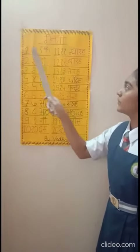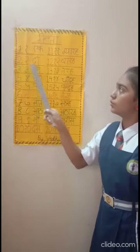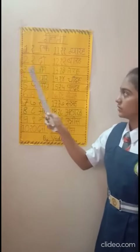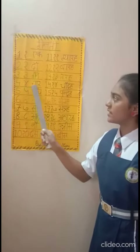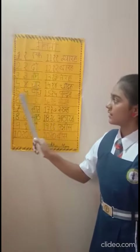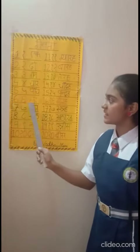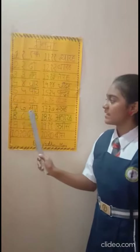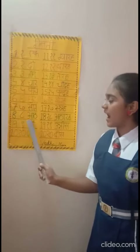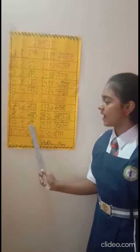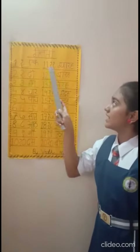Ginti: 1 - Ek, 2 - Do, 3 - Teen, 4 - Char, 5 - Paanch, 6 - Chhe, 7 - Saat, 8 - Aath, 9 - Nau, 10 - Das.